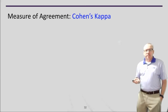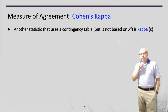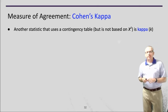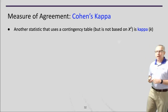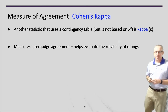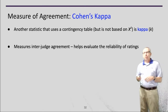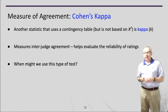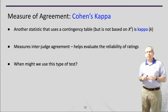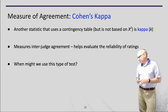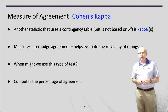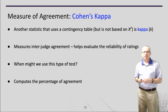One other useful nominal statistic is Cohen's kappa. It uses a contingency table but computes a different statistic measuring inter-rater or inter-judge reliability — how reliable are multiple raters' judgments when looking at the same thing. For example, two people grading assignments, or judges at a science fair. It computes the percentage of agreement among raters.